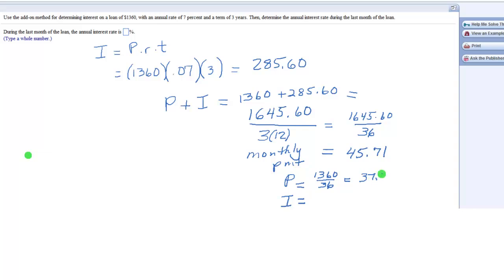So $37.78 is our principal, and then if we subtract these two, what are we going to get? Then we get that $7.93 is the interest in that payment. I just subtracted these two.